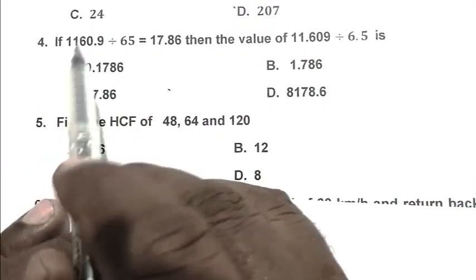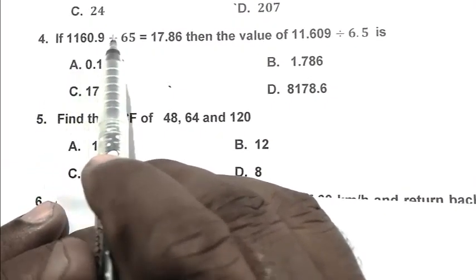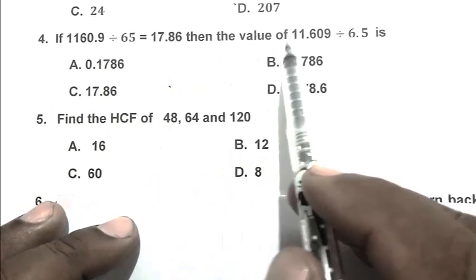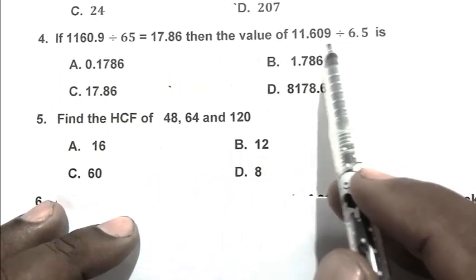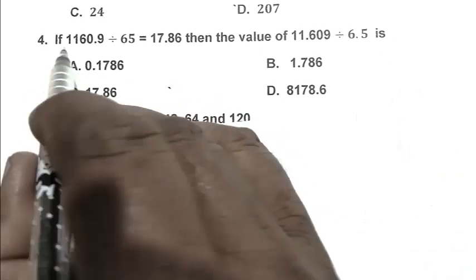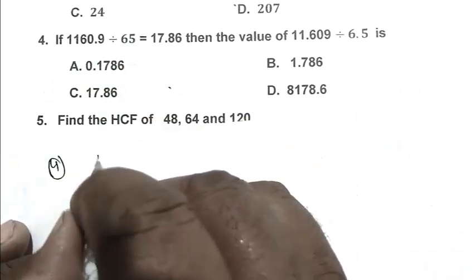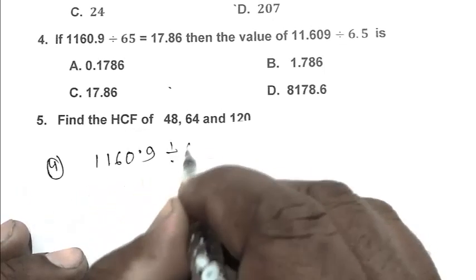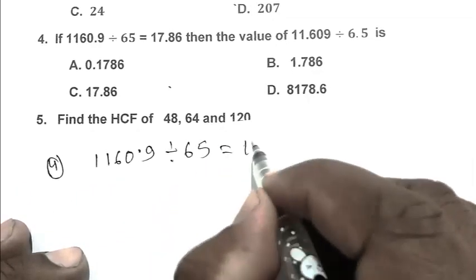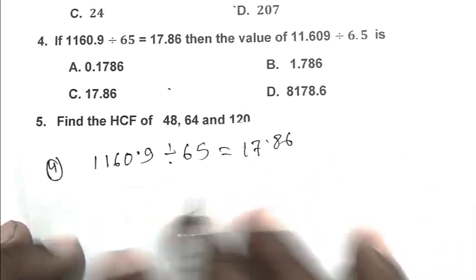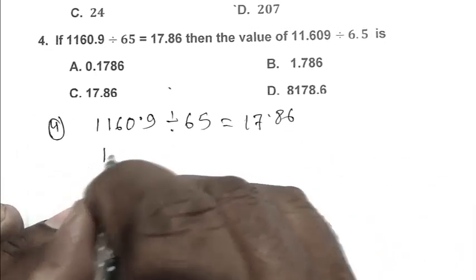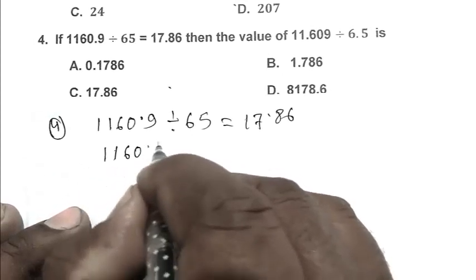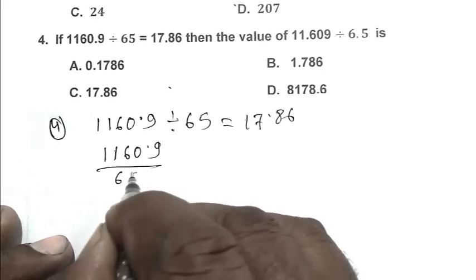Question number 4: If 1160.9 divided by 65 equal to 17.86, then the value of 11.609 divided by 6.5 is. First we write this expression: 1160.9 divided by 65 equal to 17.86.